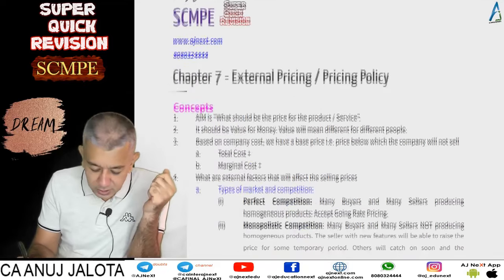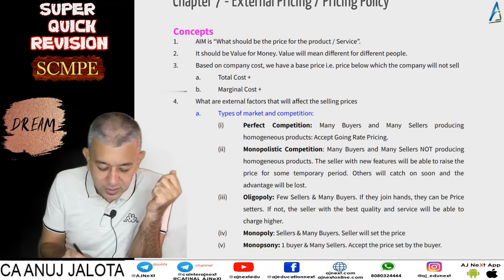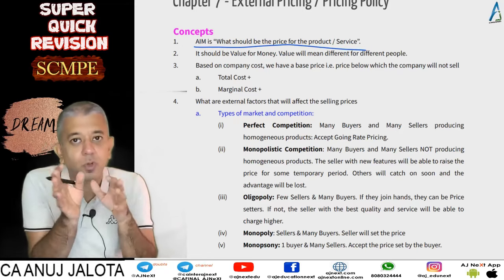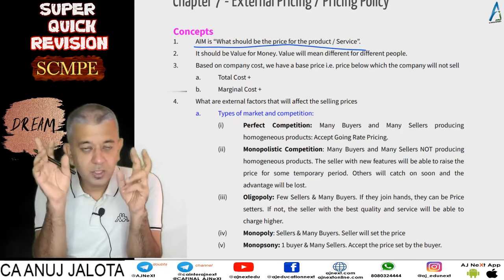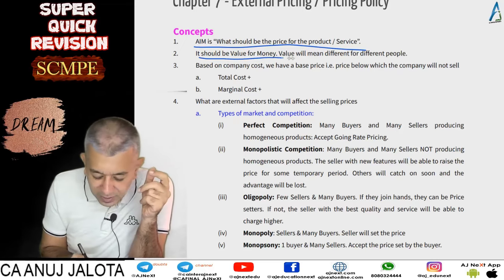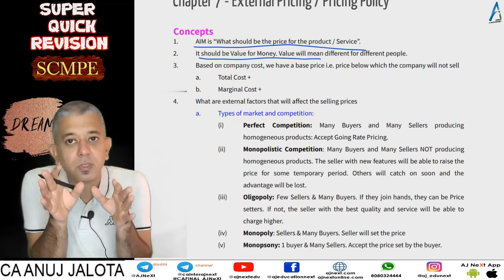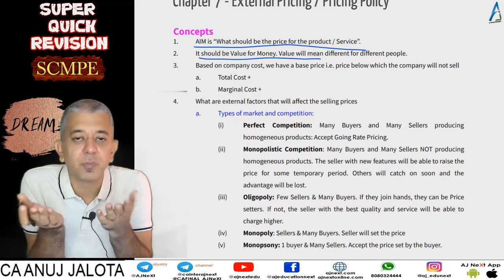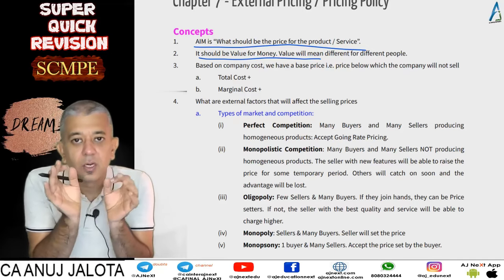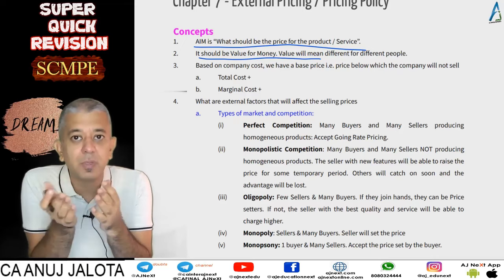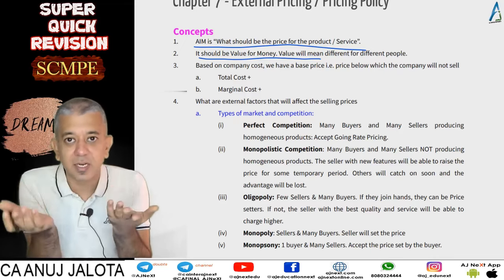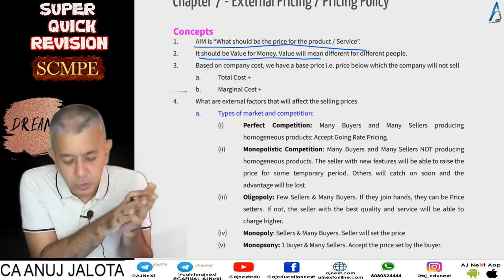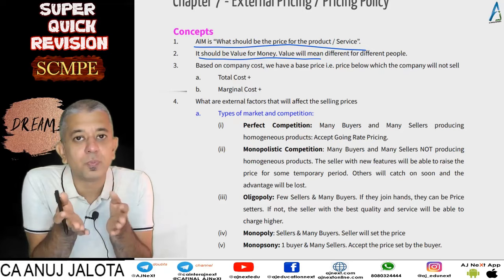Chapter number seven — the aim is: what should be the price for your product or service? In a nutshell, we have one fundamental idea: it should be value for money for the customer. Value can have different meanings for different people. For some people, value means the use of a product; for others, value means the status that a product or service gives them.